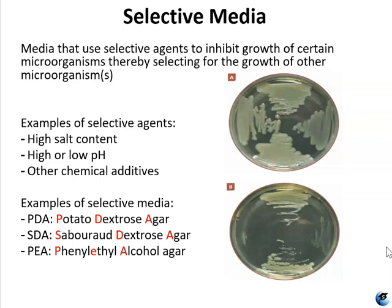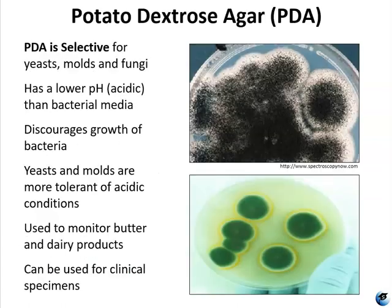EMB, MacConkey, and MSA are not just selective — they're also differential, and we'll discuss that in a moment. First, let's talk about PDA. PDA stands for potato dextrose agar. PDA is selective for yeasts, molds, and fungi. It has a low pH, so it's acidic, and that low pH discourages the growth of most bacteria. Most bacteria prefer a pH closer to neutral, between 6 and 8. This medium is often used to identify microbial contamination in food and clinical specimens.